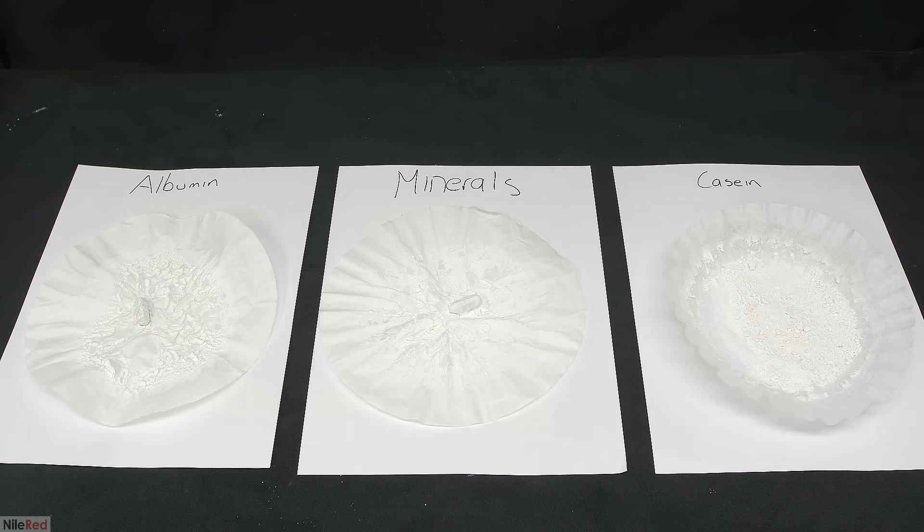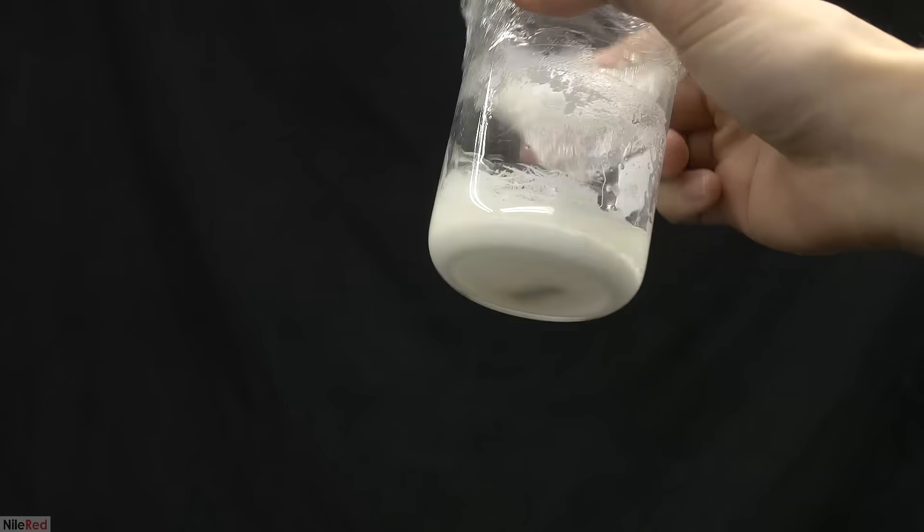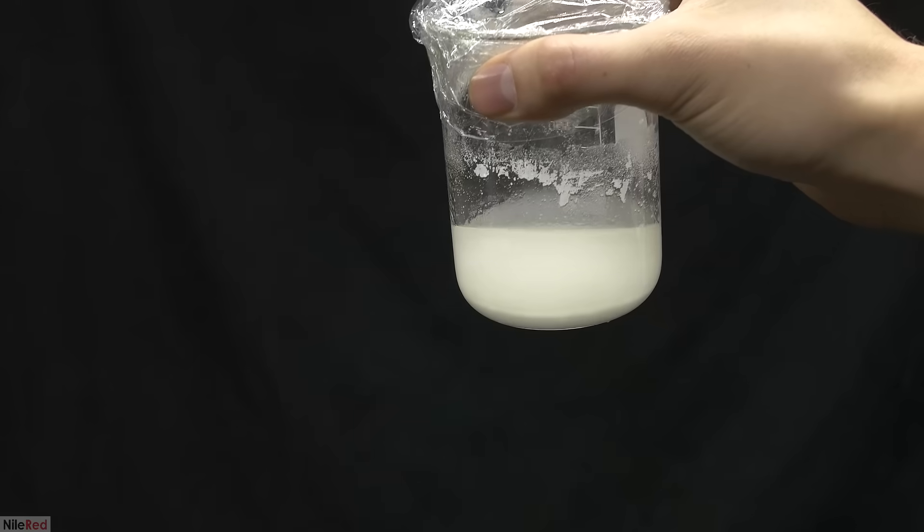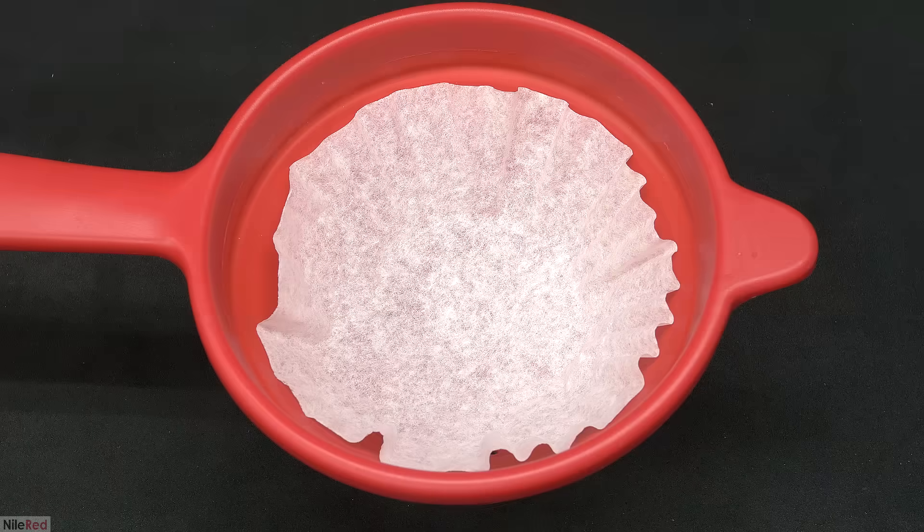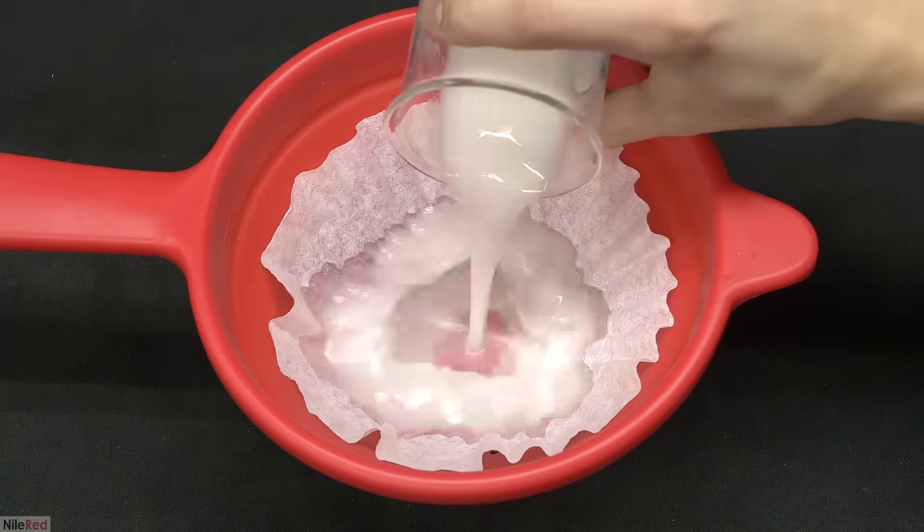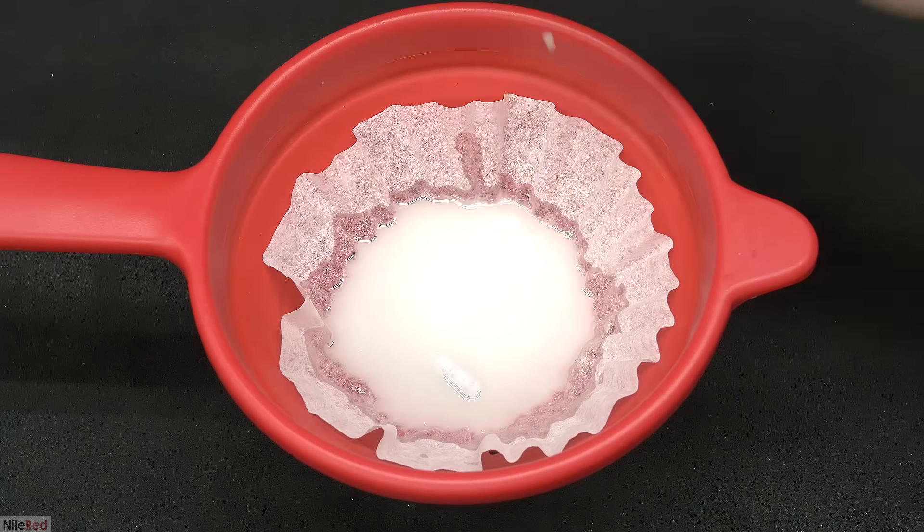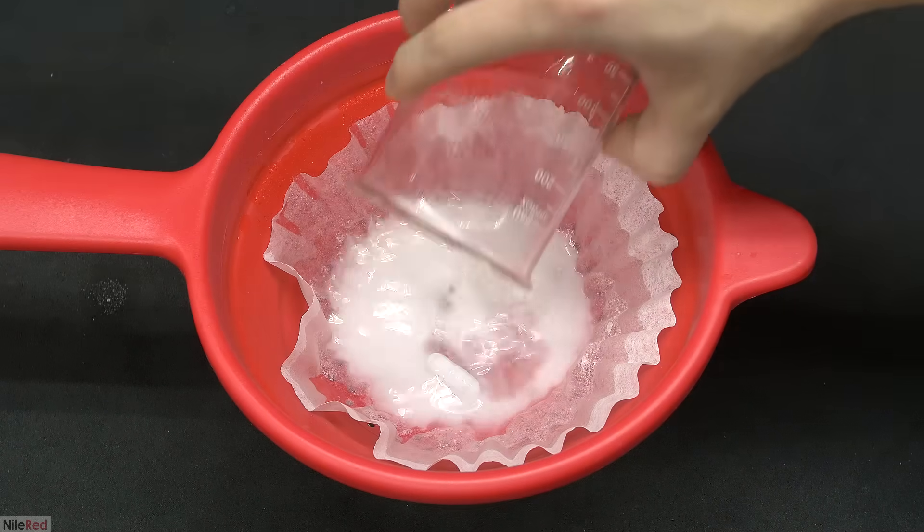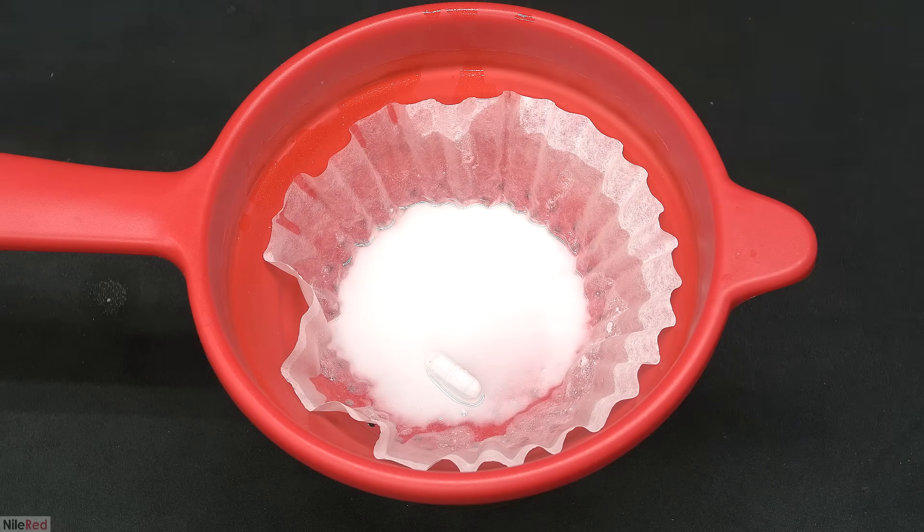A few days later, all of the filter papers were very dry. The solid from each was then scraped off and weighed. About four days later, the lactose ethanol mixture was removed from the fridge and filtered off. Everything was transferred to the filter, and the beaker was washed with a little bit of cold ethanol. Once everything had passed through, I added a bit more cold ethanol to wash the lactose.